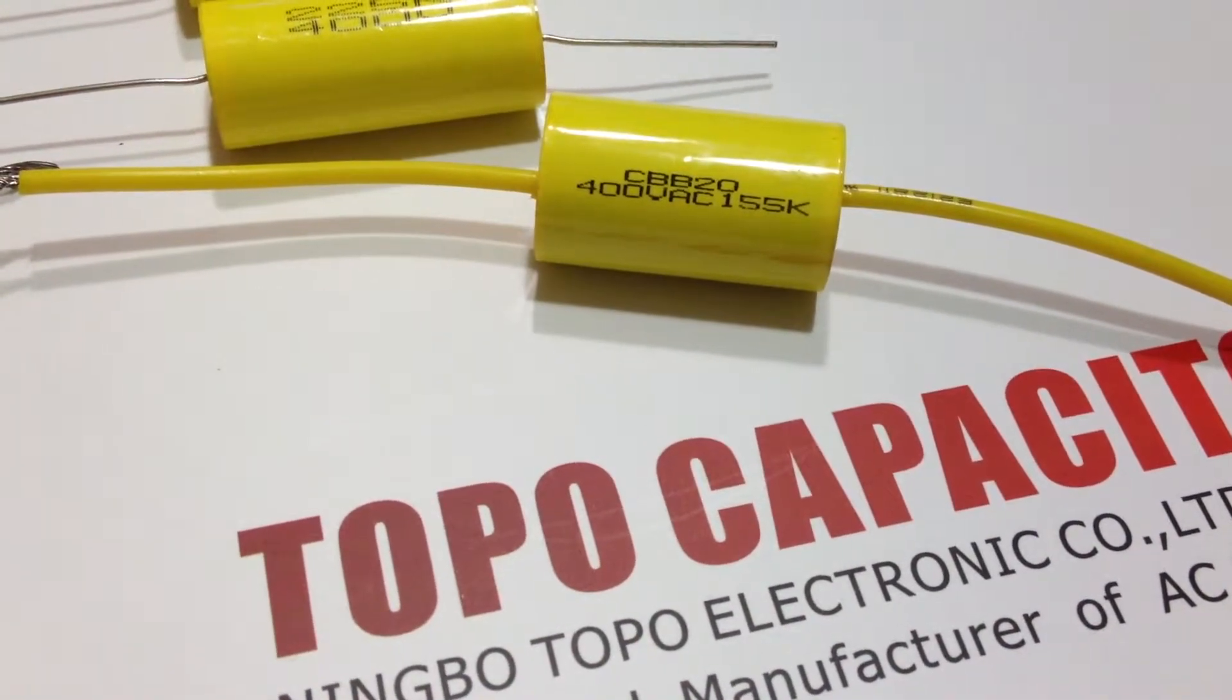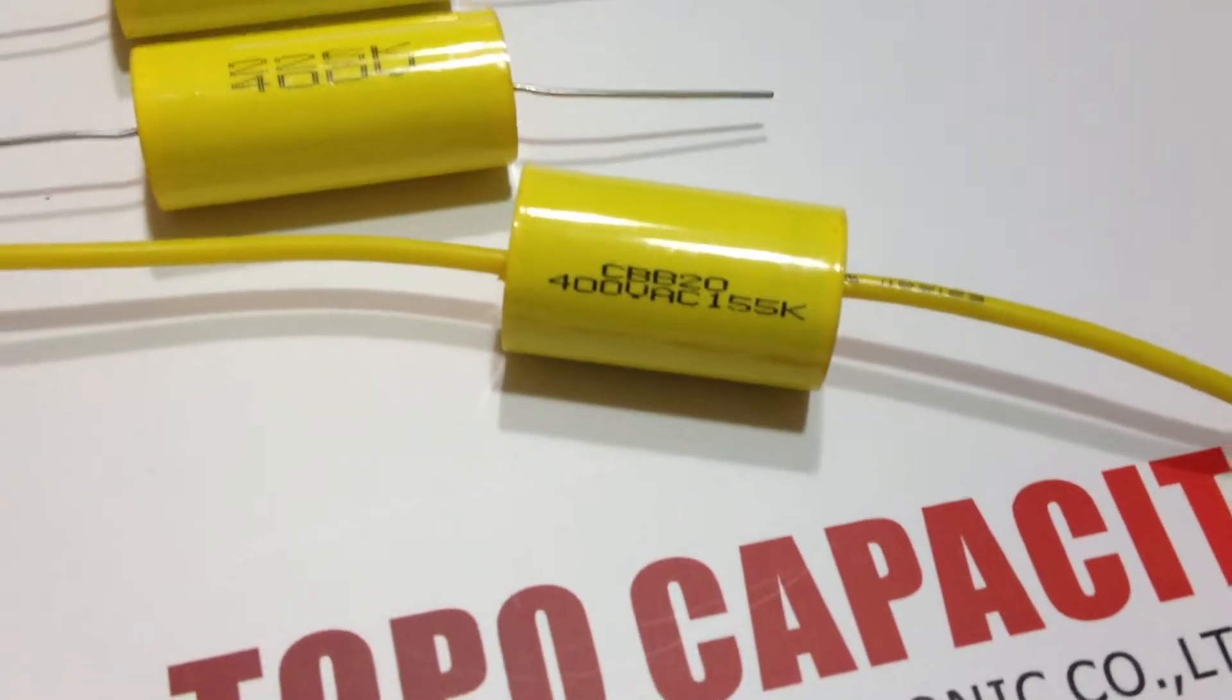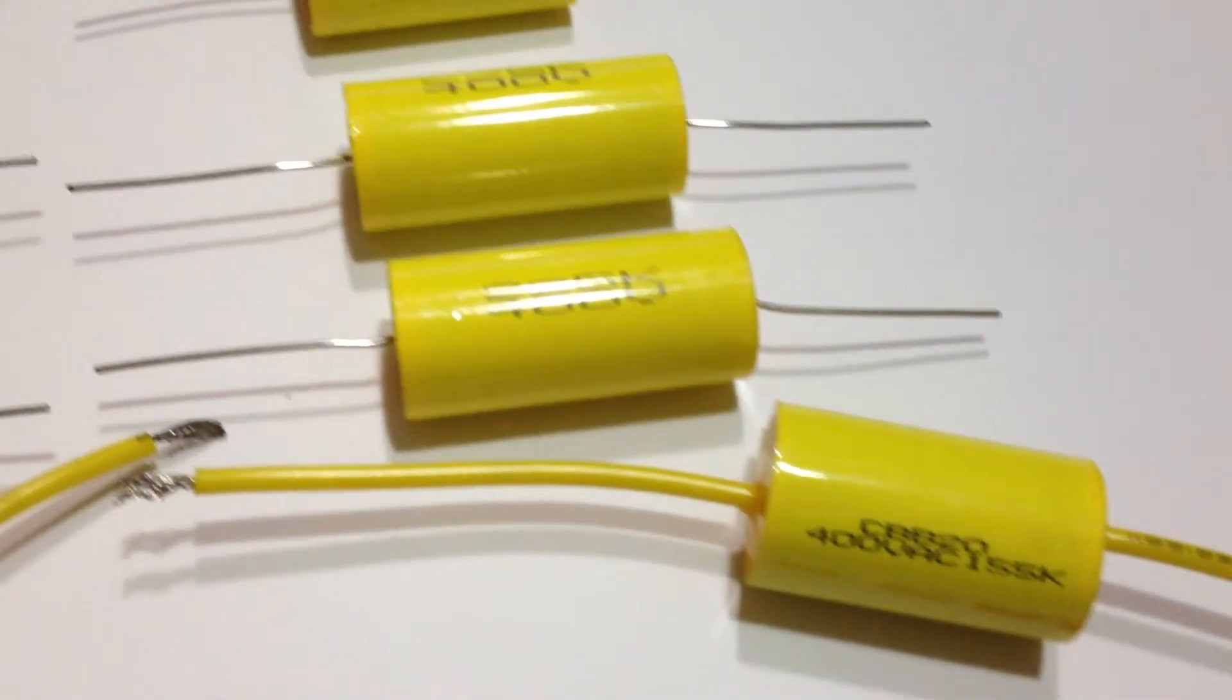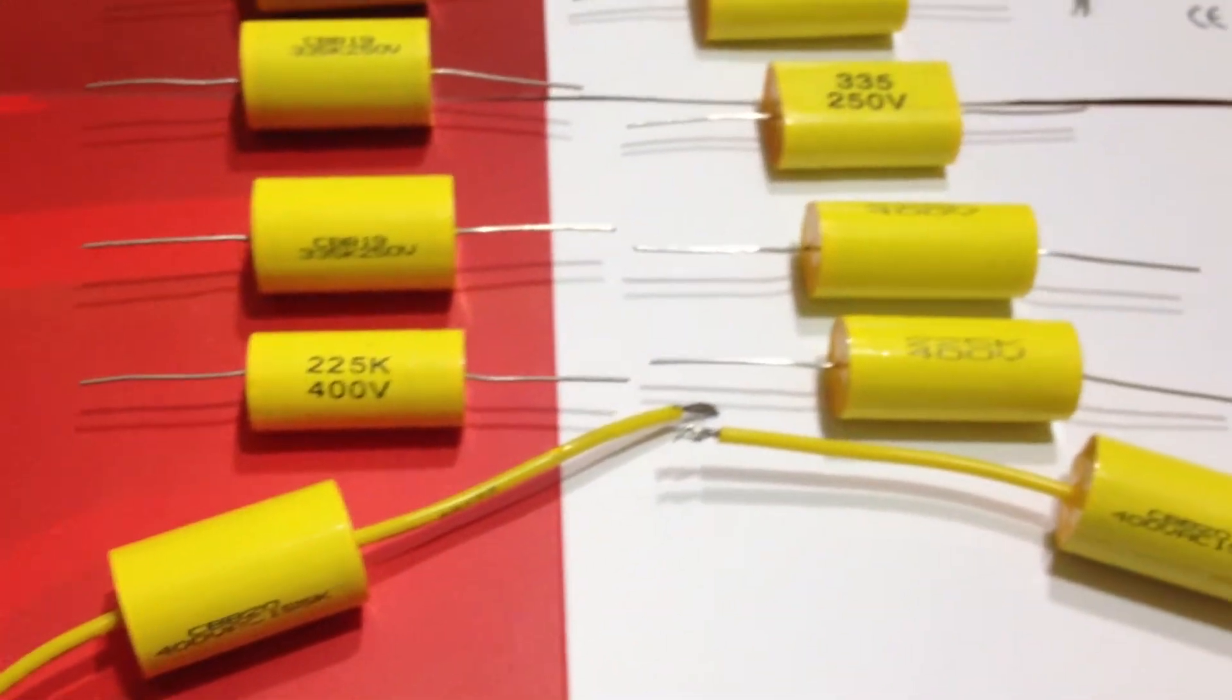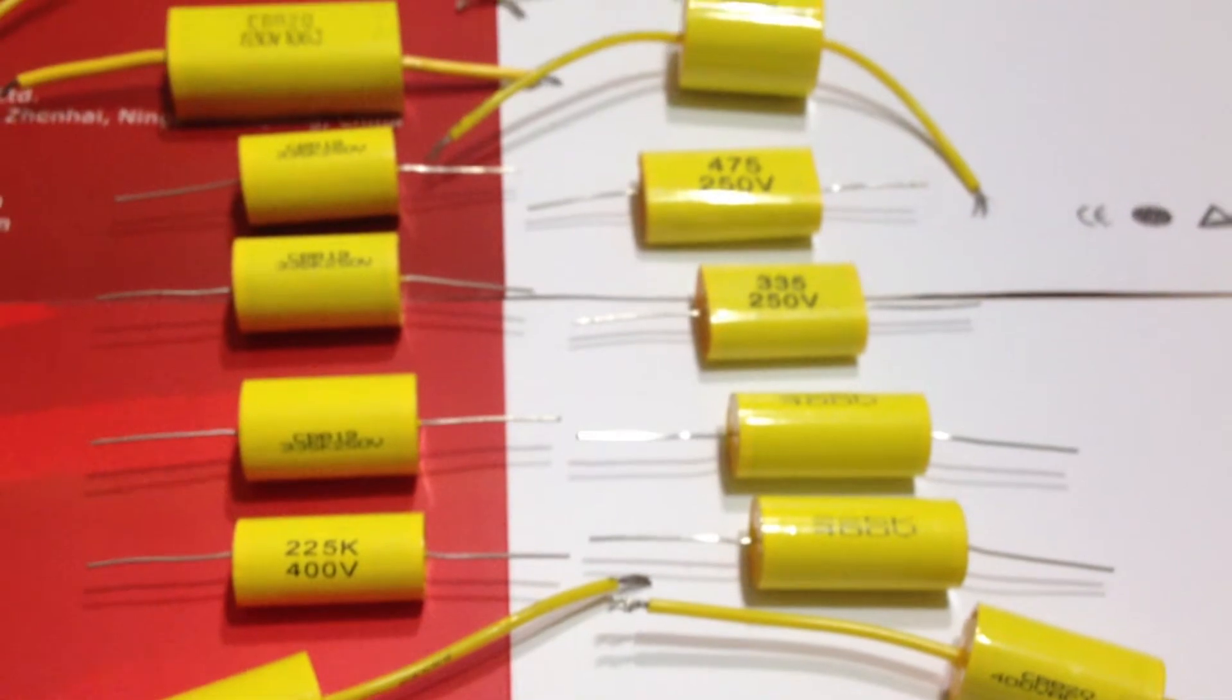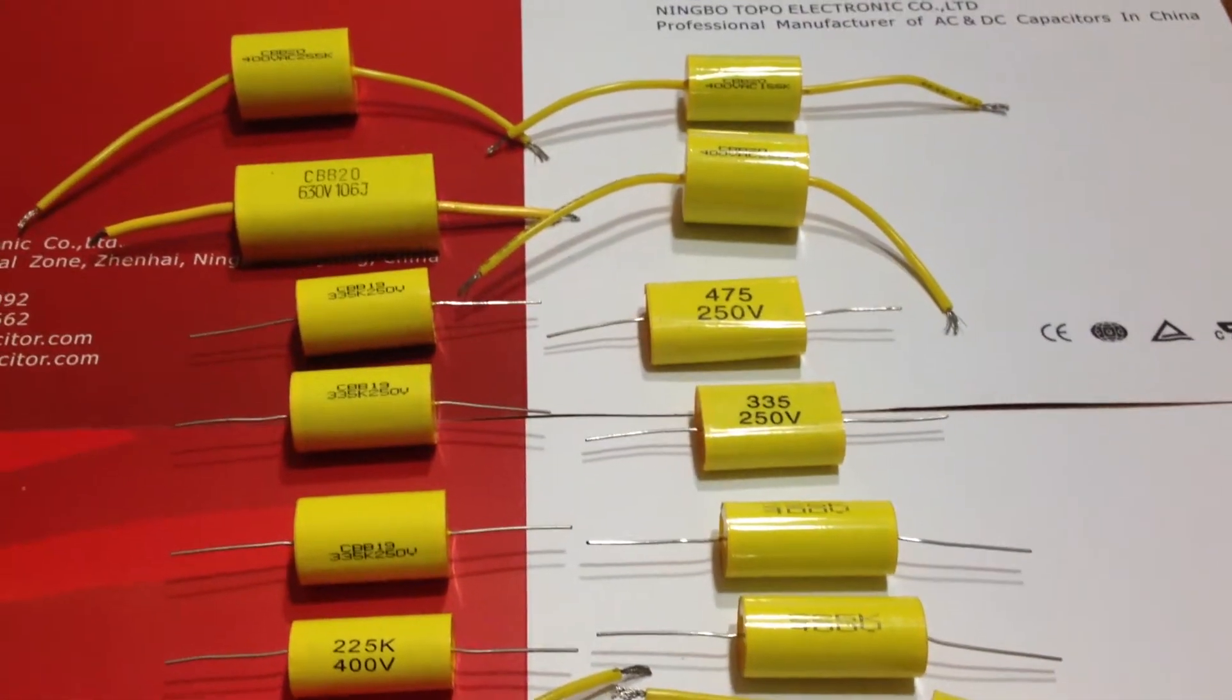Today I introduce X2 anti-jamming metalized polyester film capacitors to everybody. They are widely used in electric tools, color TV, wireless joining devices, cross-power circuits, filters of electromagnetic interference, switches, and high-power electronic rectifiers.